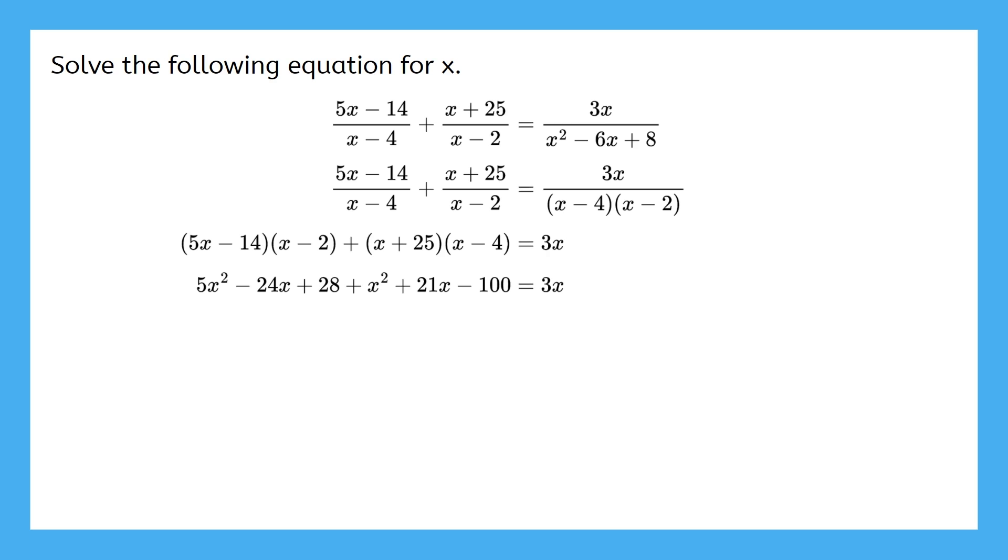Well, there's a lot of terms on the left side that can be combined. 5x squared and 1x squared is 6x squared. Negative 24x and 21x is negative 3x. And finally, 28 and negative 100 is negative 72. Subtracting 3x from both sides gets this equal to 0. Now, we can divide every term by 6, then factor it. Setting each factor equal to 0 gives us possible solutions of 4 and negative 3.